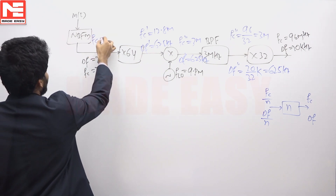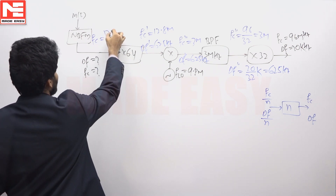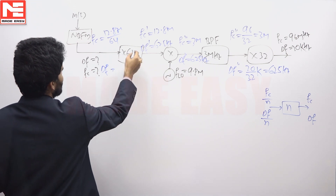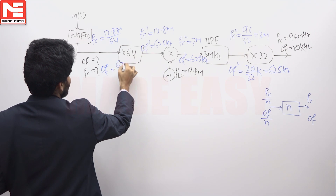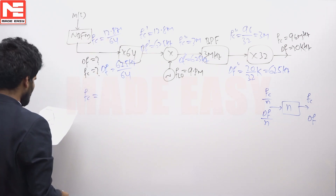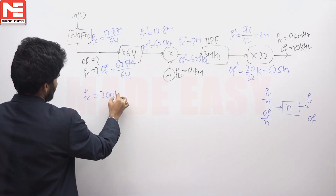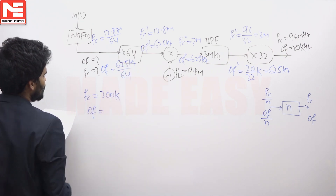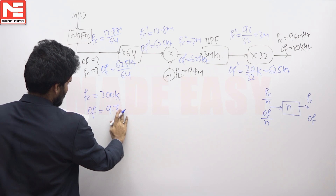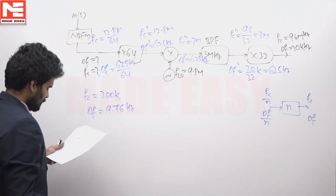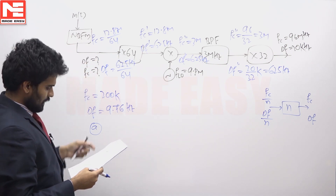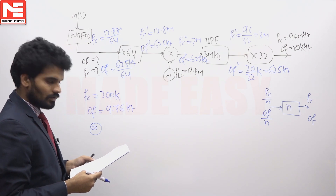Working back through the 64x frequency multiplier: the carrier frequency before it is 12.8 MHz divided by 64, which equals 200 kilohertz. The delta f is 625 hertz divided by 64, which is approximately 9.77 hertz — between 9 and 10 hertz. Therefore, option A is correct.